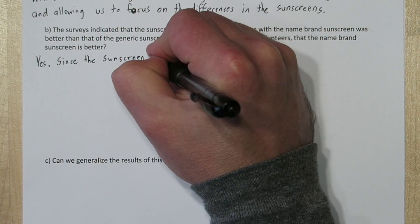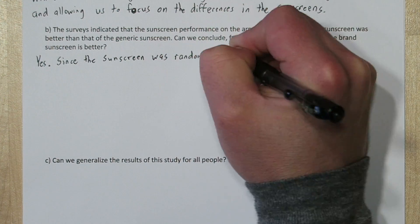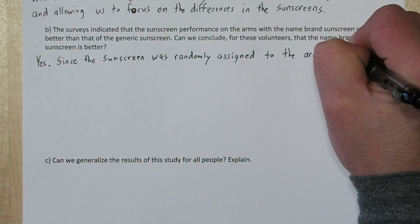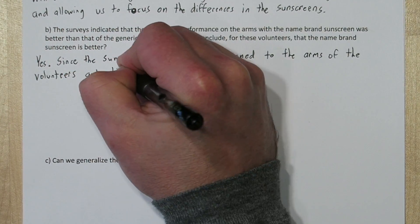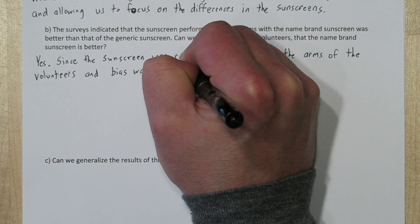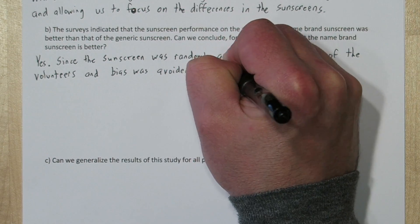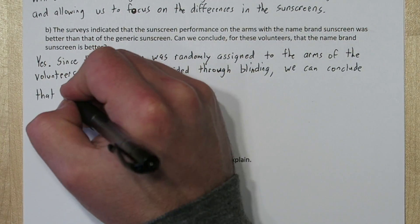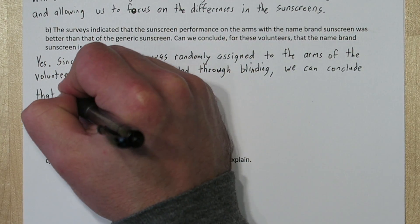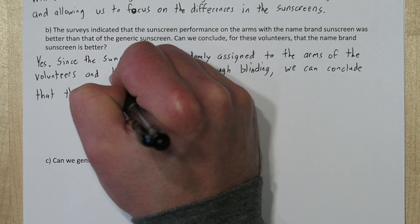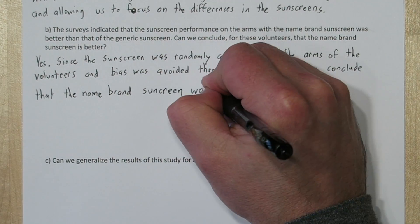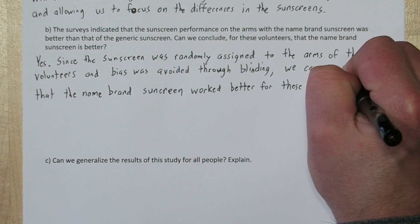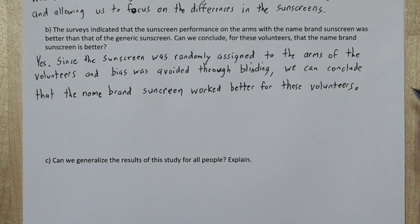Since the sunscreen was randomly assigned to the arms of the volunteers, and bias was avoided by blinding — they didn't let the volunteers know which sunscreen was going on which arm — we can conclude that the name brand sunscreen worked better for these volunteers.